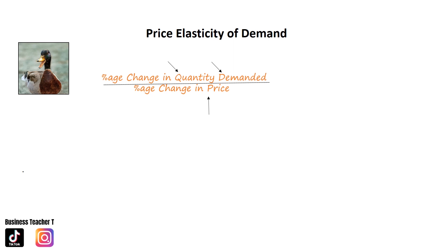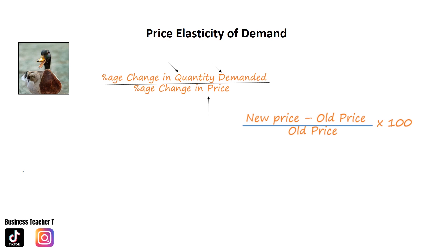At times in your business paper you might be asked to calculate the percentage change. Remember the formula: new minus old, divided by old, times by 100. You would then input that information into the PED equation.